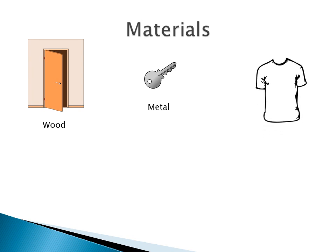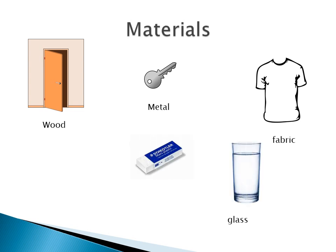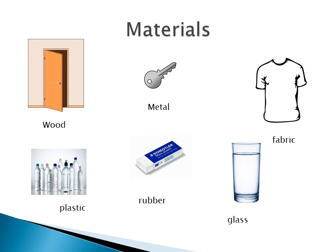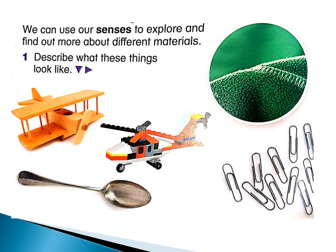This is a shirt — it is a fabric material and it is made from cotton, which comes from the cotton plant. This is glass. This is an eraser — it is made from rubber, which comes from the rubber tree. And this is a plastic bottle — its material is plastic.